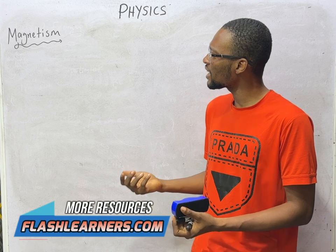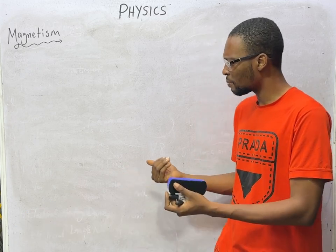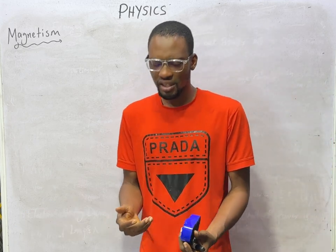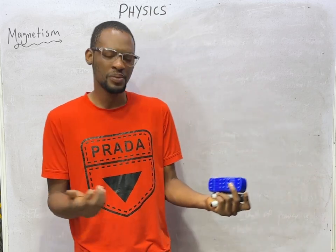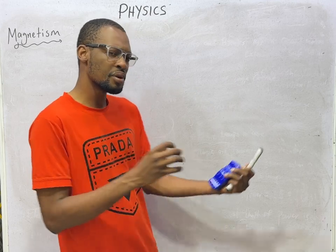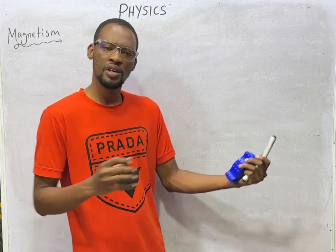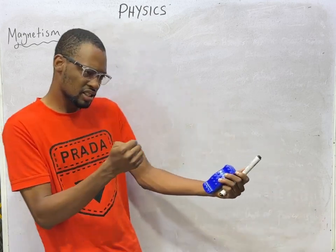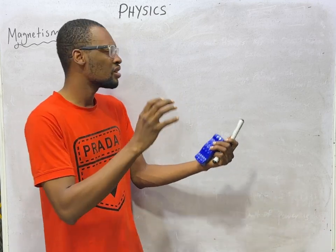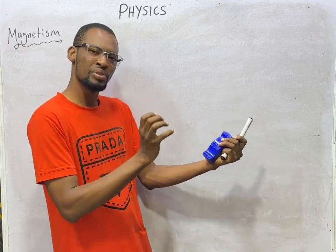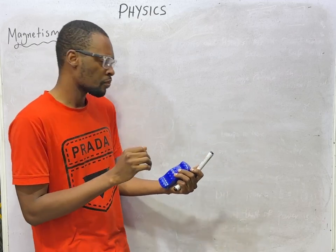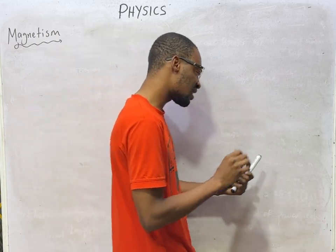When you hear magnet, what is magnet? Magnet is simply a body possessing attractive and repulsive properties. It can attract, it can repel. So magnets possess both attractive and repulsive properties.